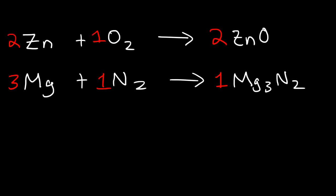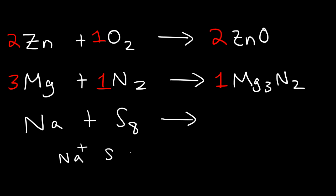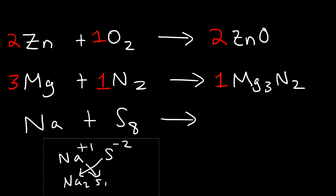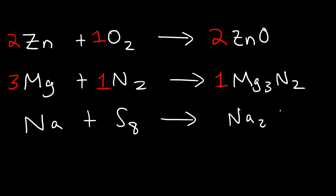Let's react sodium metal with elemental sulfur. We get a compound between sodium and sulfur — sodium sulfide. Sodium has a +1 charge and sulfide has a -2 charge, so the formula is Na₂S. To balance it, put an eight in front of Na₂S, giving eight sulfur atoms on both sides and sixteen sodium atoms on the right, so we need a sixteen in front of Na.